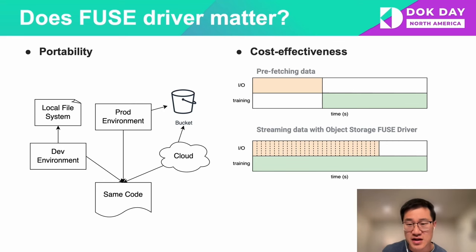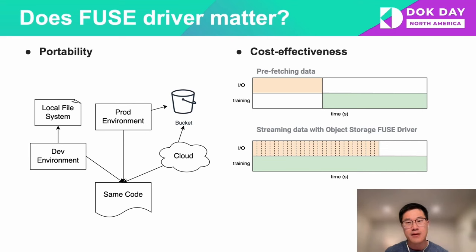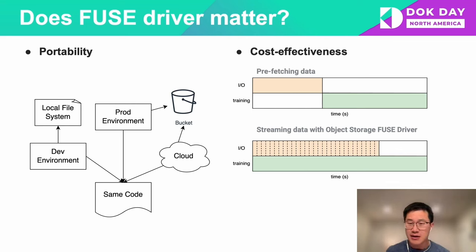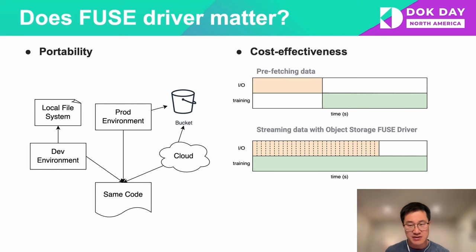Another huge benefit is cost effectiveness. AI applications usually require expensive computing resources such as GPUs or TPUs. Before the training job actually starts, the application needs to make sure the data is ready to feed the computing resources. Downloading or prefetching data from object storage to local storage can result in compute resource idle time, which is a huge waste of time and money. Object storage FUSE drivers allow AI applications to eliminate the need to download data to local storage — all the data can be streamed and the training jobs can start right away.